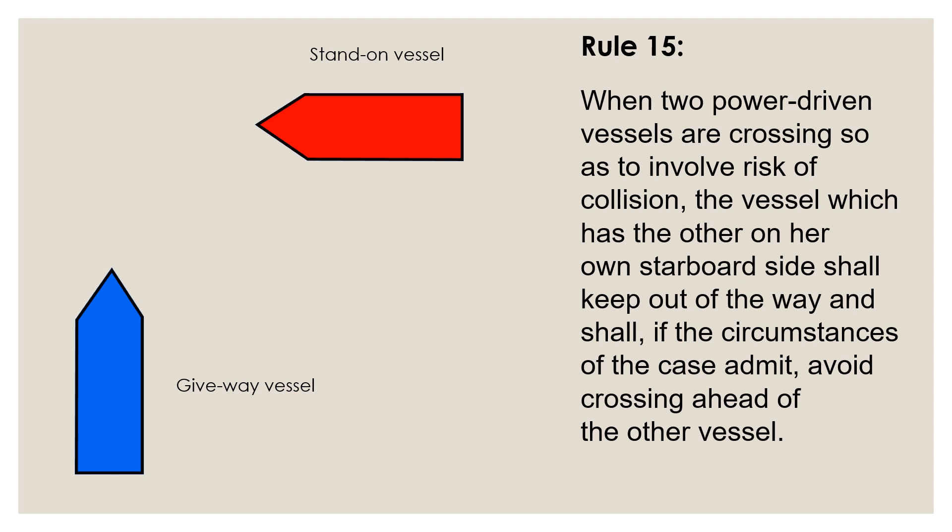Again, with the other rules in this section that covers crossing situations, crossing situation is covered under Section 2 of rules of the road, which applies only until the risk of collision exists. So this rule applies only when the risk of collision exists.